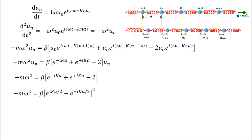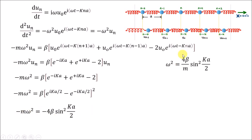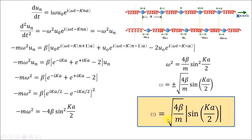The equation takes the form with a bracketed term that can be written as e^{ika} - e^{-ika}, which is of the form e^{i theta} - e^{-i theta}. This can be written in terms of sin theta, since sin theta = (e^{i theta} - e^{-i theta}) / 2i, where theta = ka/2. Writing it in this form with a factor of 4 and accounting for i² = -1, and cancelling the minus sign on both sides, we get an expression for omega² as omega² = (4 beta / m) sin²(ka/2). So omega is the square root of this expression, and since frequency is always positive, we ignore the negative sign.